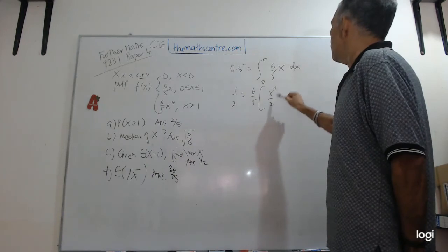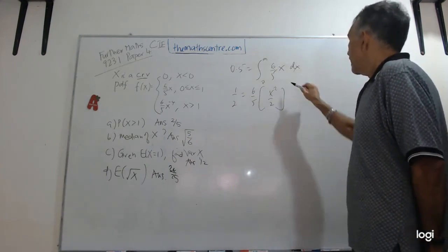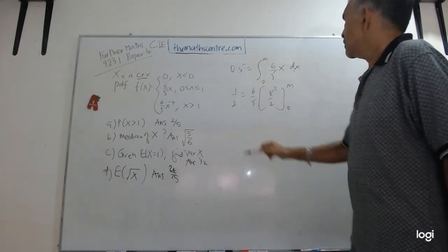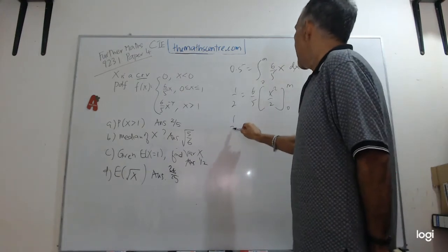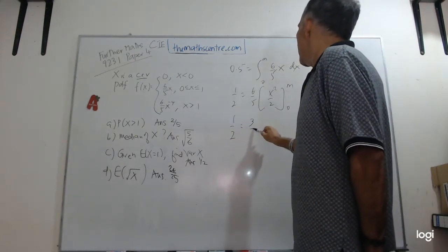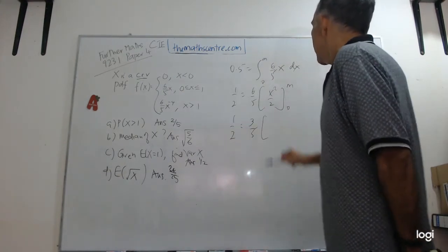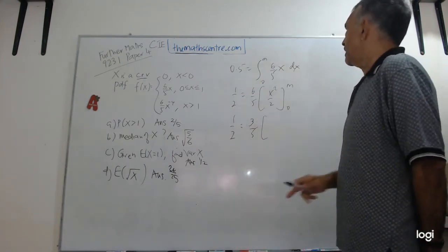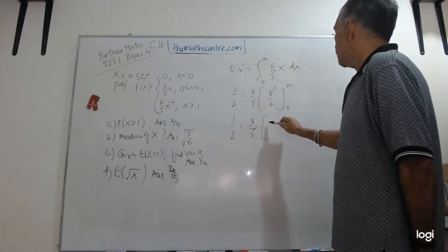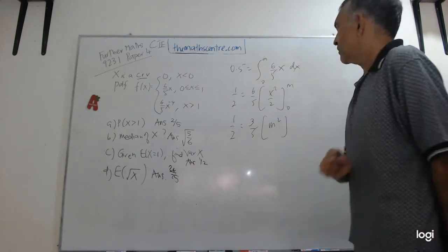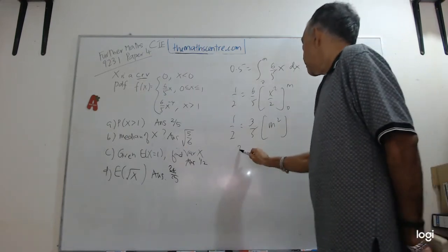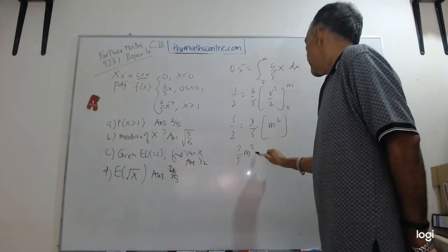I'll get x squared over 2. And I have M and 0, so let's see, I have half equals to 3 over 5. This 2, I take it out, you get 3 over 5, and this will be just M squared. So I have 3 over 5, M squared equals to half,